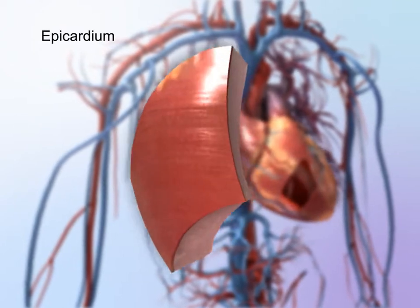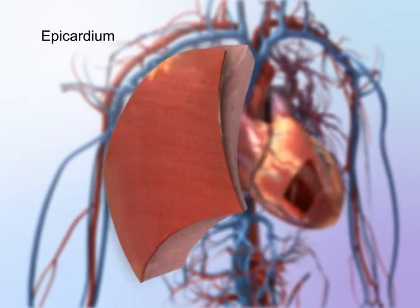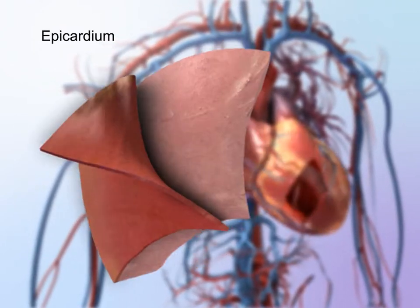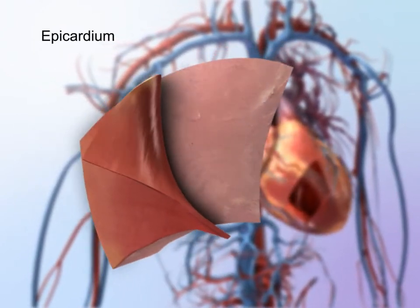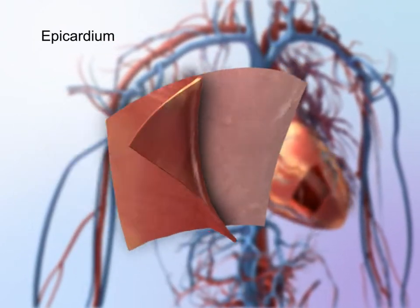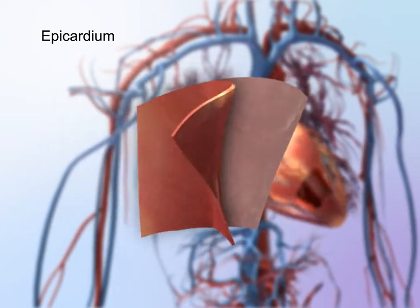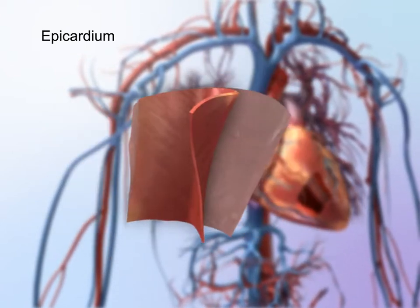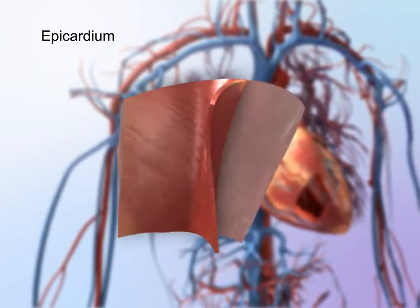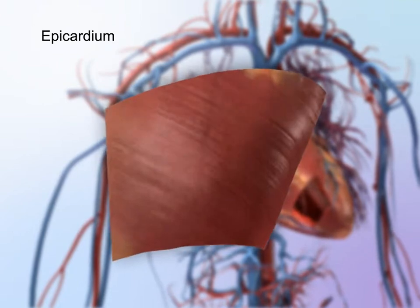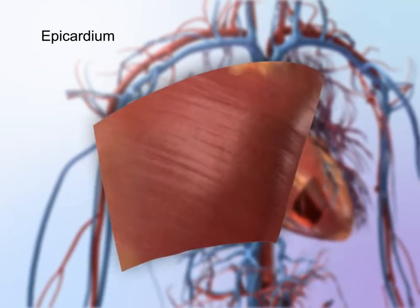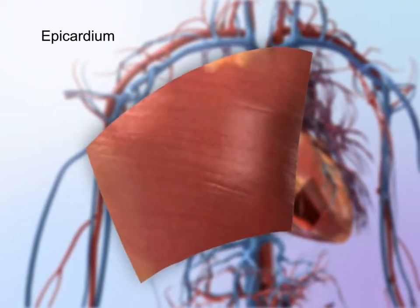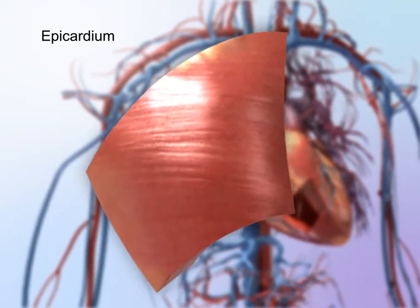A thin layer called the epicardium, or visceral pericardium, forms the outermost part of the heart wall. This layer adheres the heart to the pericardium, a sack of tissue that protects the heart from friction as it beats.